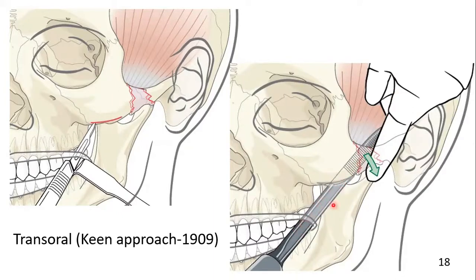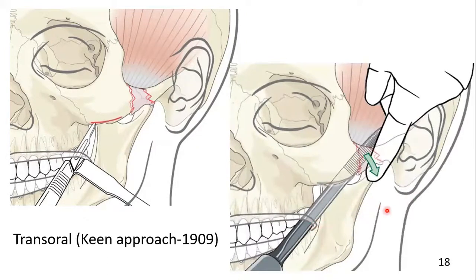In the second step, a heavier instrument such as a Bristow's elevator or Rose elevator is inserted behind the infratemporal surface of the zygoma. Using superior, lateral, and anterior force, the fracture is reduced. The use of one hand over the side of the face to assist the reduction is extremely helpful. One should take care to avoid using the maxilla as a fulcrum point. The incision in the mucobuccal fold is then sutured.